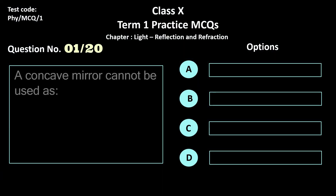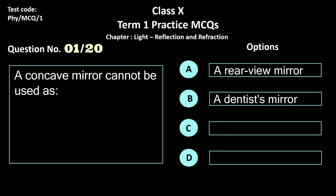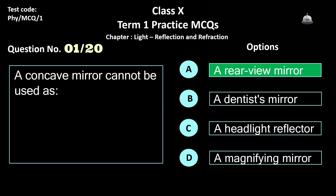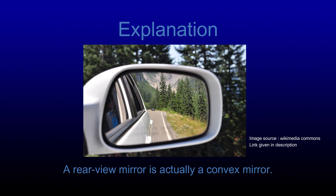Question 1. A concave mirror cannot be used as — options: a) a rear view mirror, b) a dentist mirror, c) a headlight reflector, and d) a magnifying mirror. The correct answer is option a, a rear view mirror. Only convex mirrors are used as rear view mirrors.